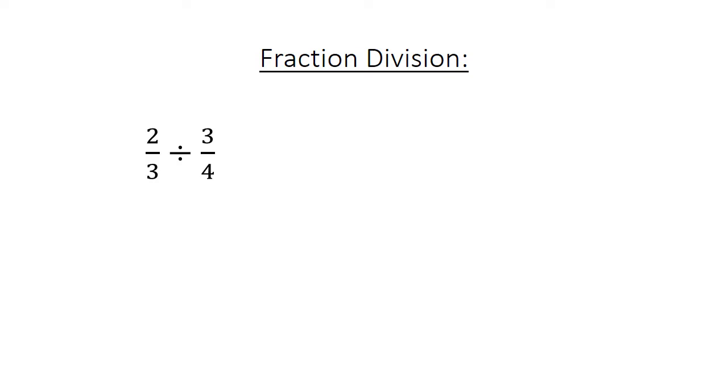Fraction division. 2 over 3 divided by 3 over 4 equals 2 over 3 times 4 over 3. Equals 8 over 9.